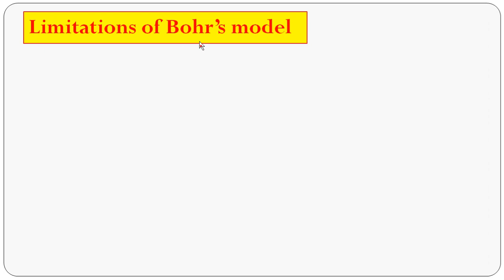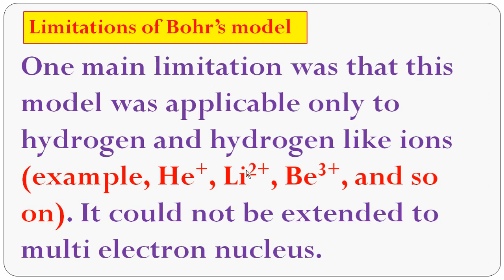The main limitation of the Bohr atom model is that it was applicable only to hydrogen and hydrogen-like ions such as He⁺, Li⁺, and Be³⁺, but it could not be extended to explain multi-electron atoms.